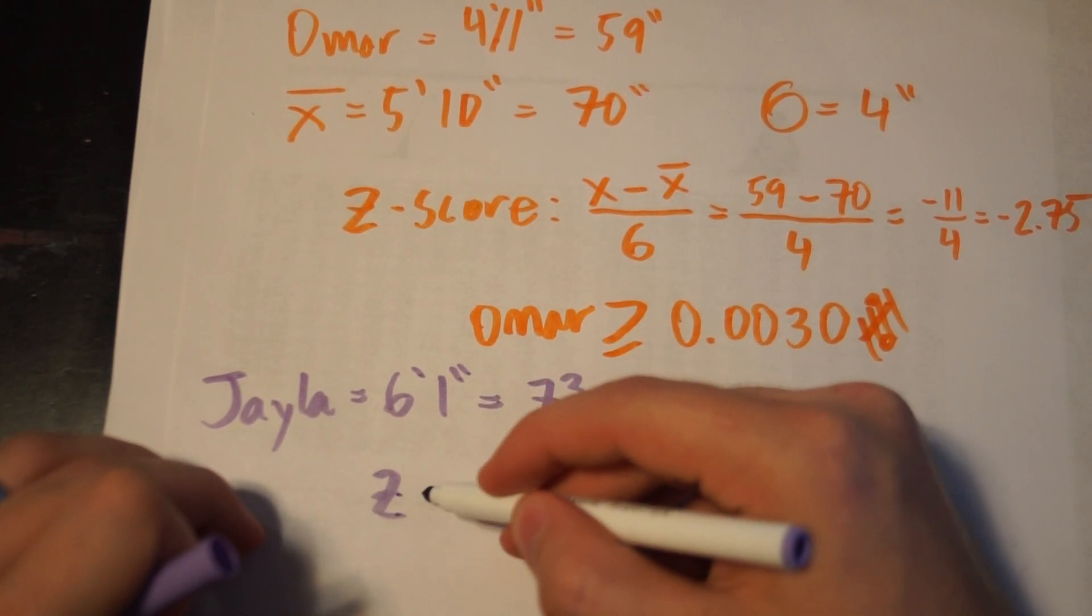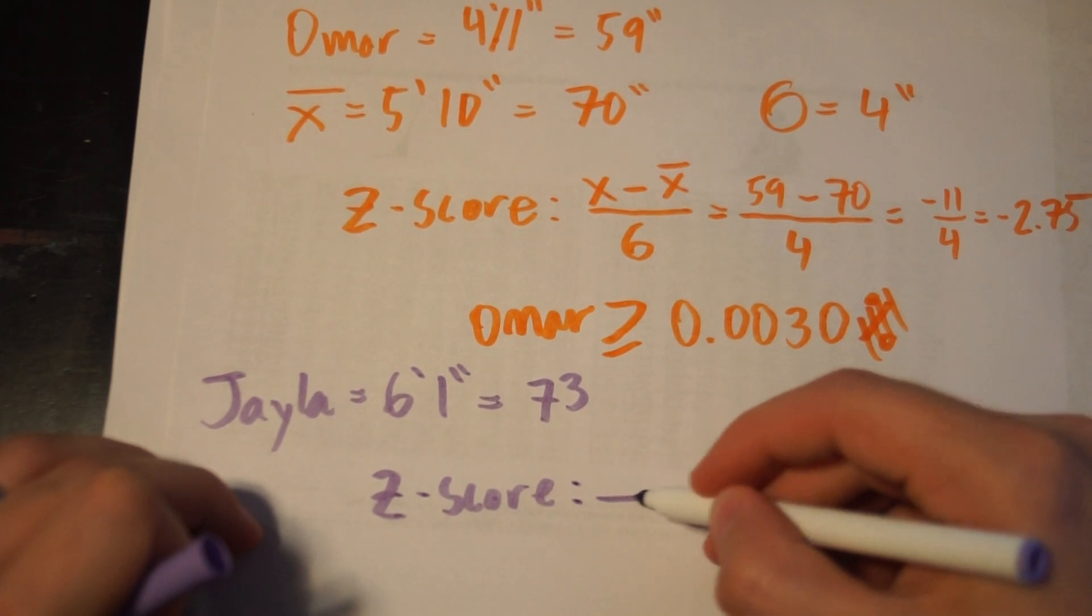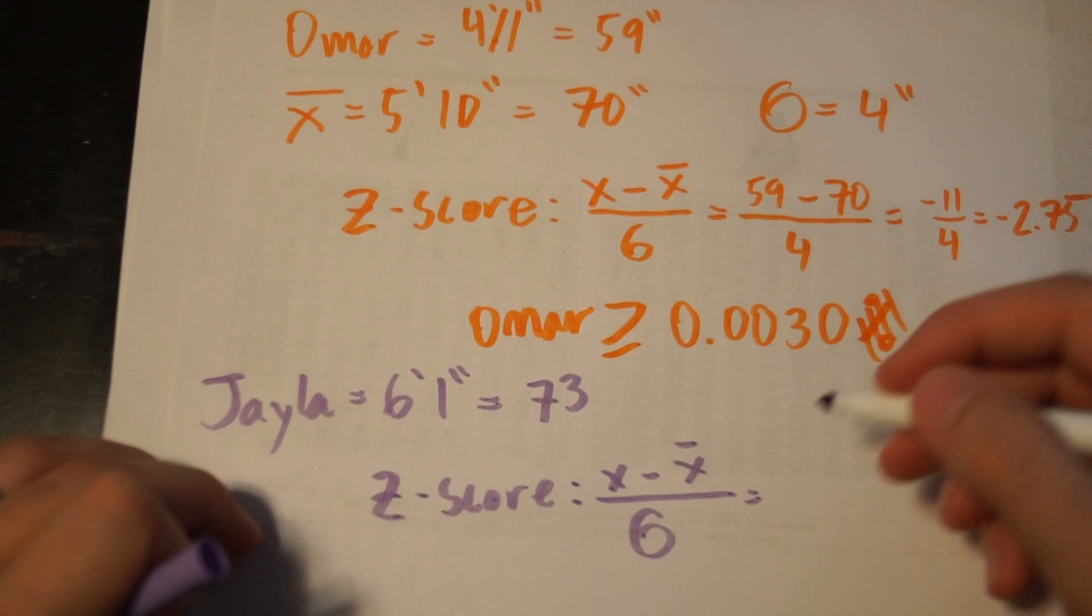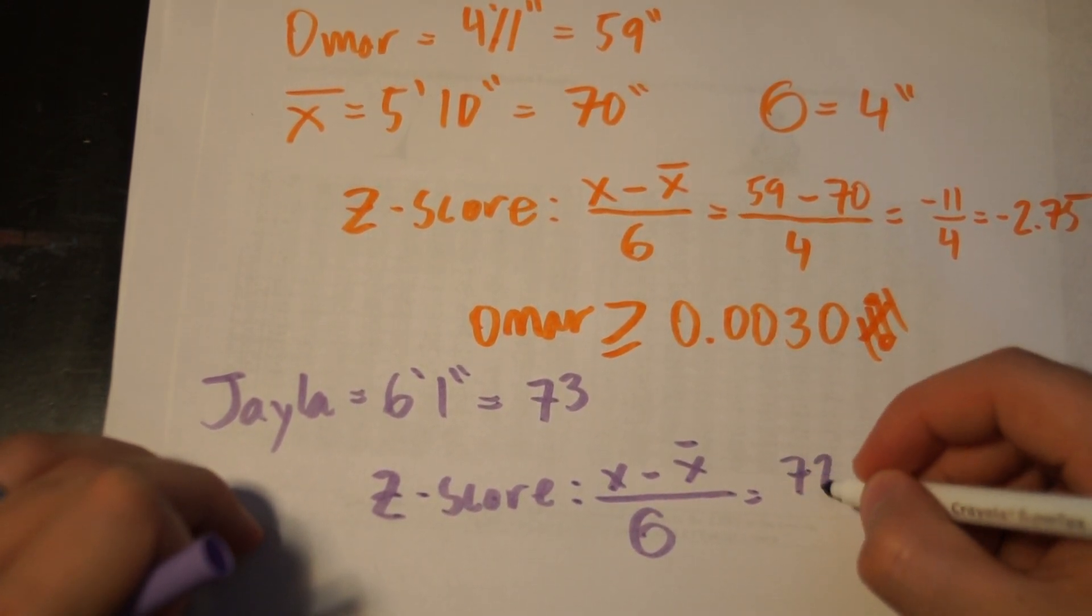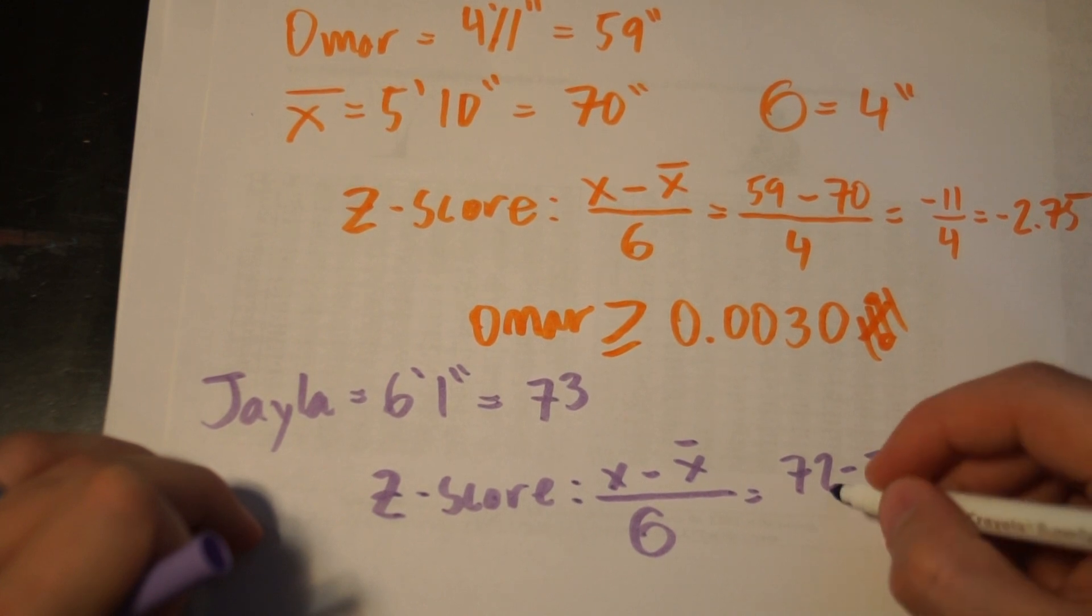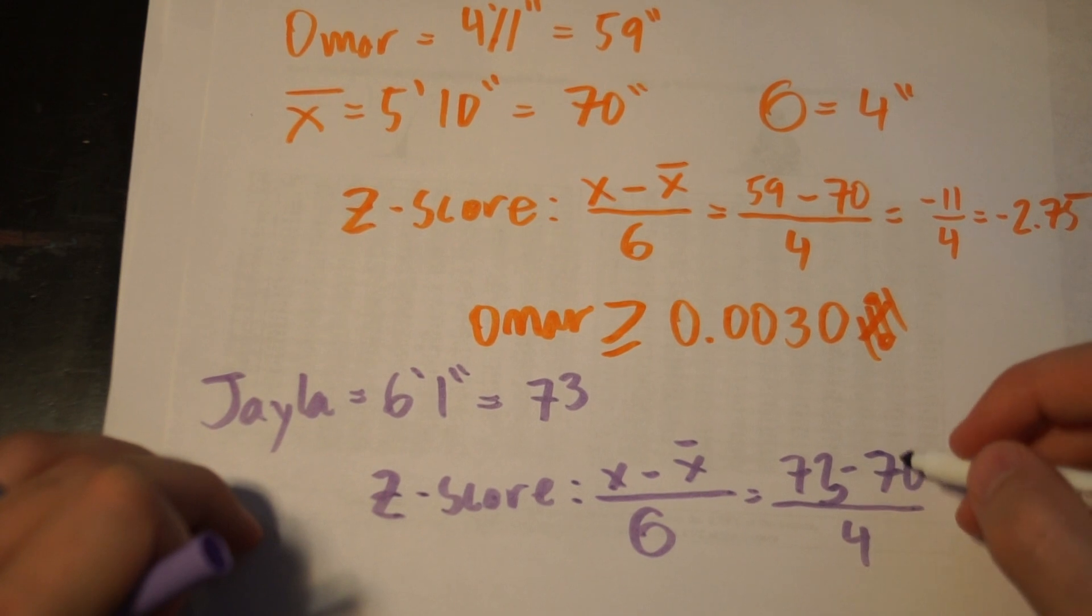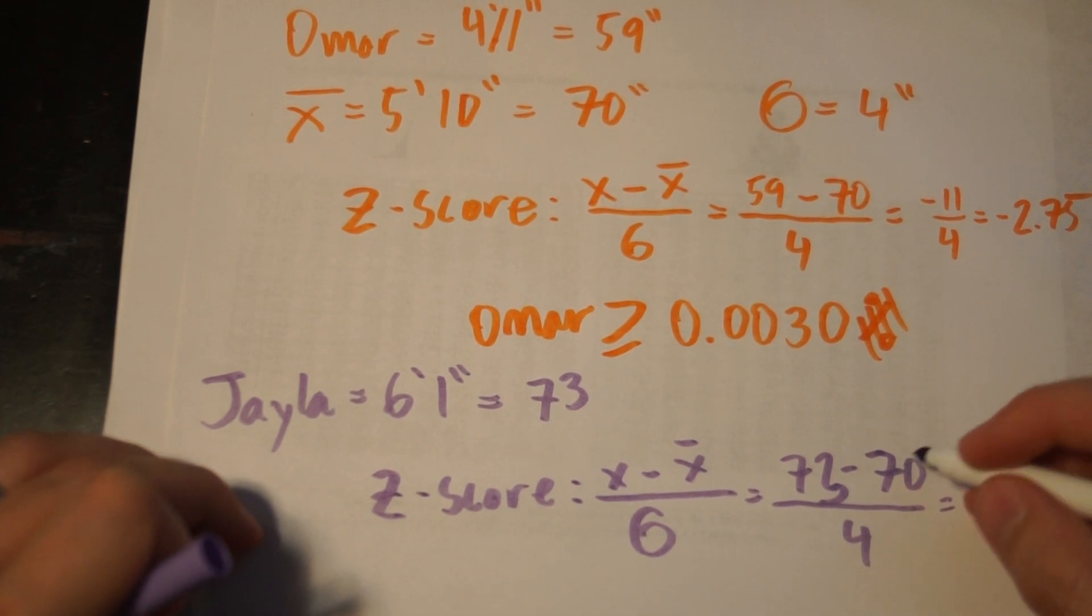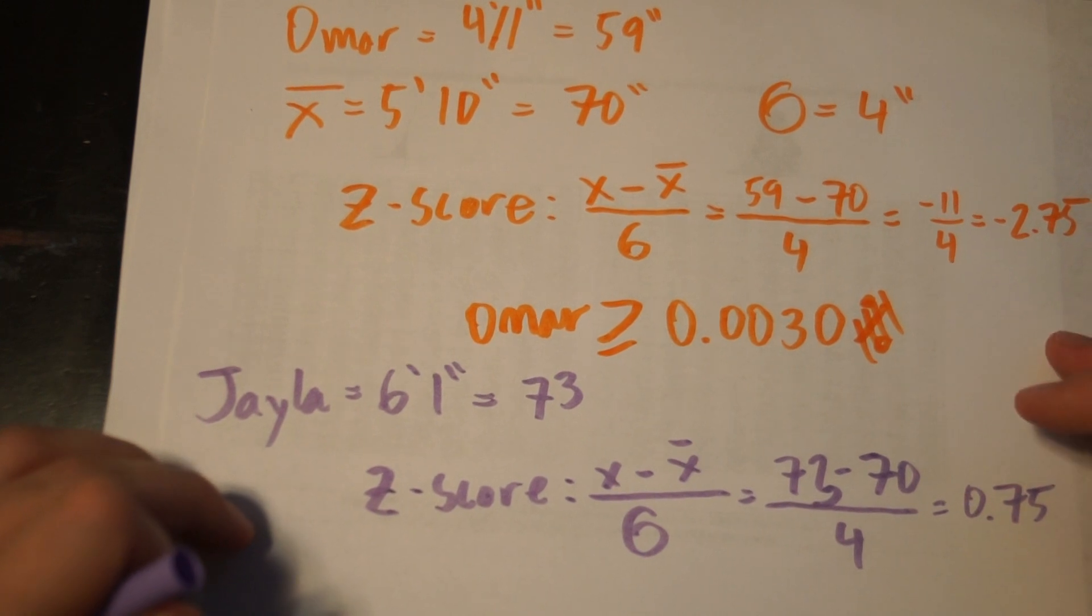We still can find our z-score the same way. 73 minus 70 all over 4, because our mean and our sigma didn't change, just the person we were finding the z-score for, so that is 0.75, I can do 3 quarters in my head.